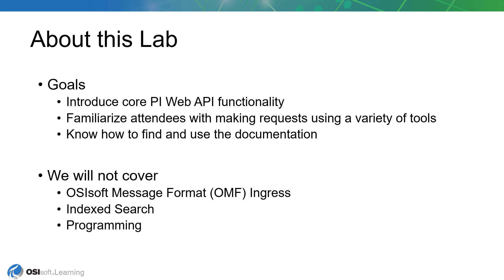Just as importantly, we'll become familiar with the Web API documentation so that you know how to find the information you need going forward. There are some topics to point out that will not be covered in this class. The OMF endpoint added for PI Web API in the 2019 version is the preferred way of writing time series data moving forward — it deserves more attention than we can give it here. Additionally, the PI Web API index search will not be covered, but we will look at alternative ways of searching within the PI Web API.